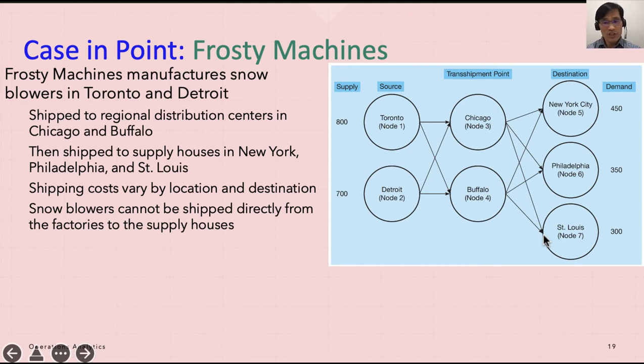Frosty Machines would like to minimize the transportation cost associated with shipping sufficient snow blowers to meet the demands at the three destinations, while not exceeding the supply at each factory. Thus, we have supply and demand constraints similar to the transportation problem. But, we also have one constraint for each transshipment point, indicating that anything shipped from these to a final destination must have been shipped into that transshipment point from one of the sources.